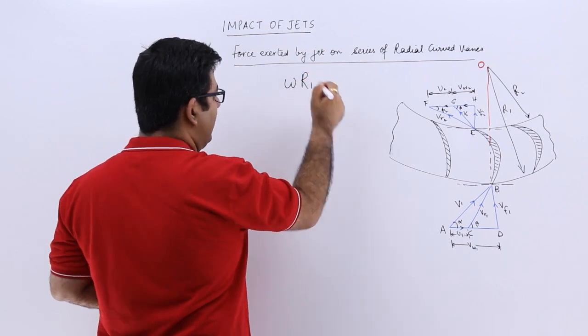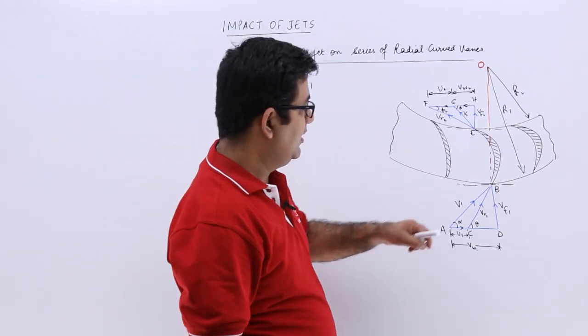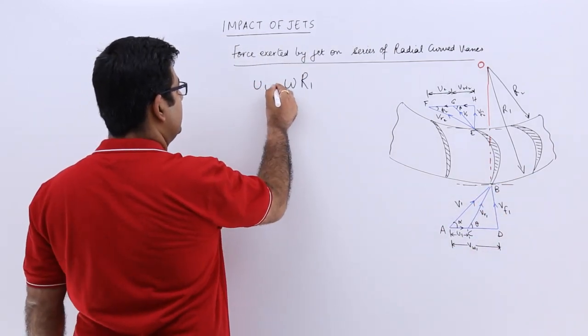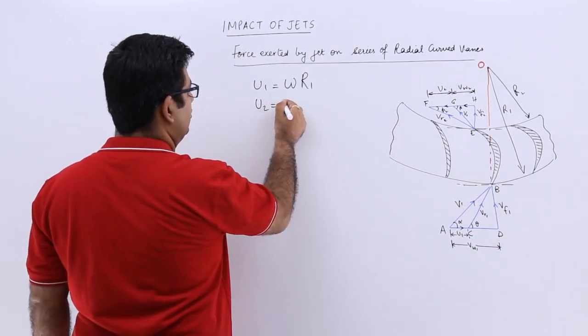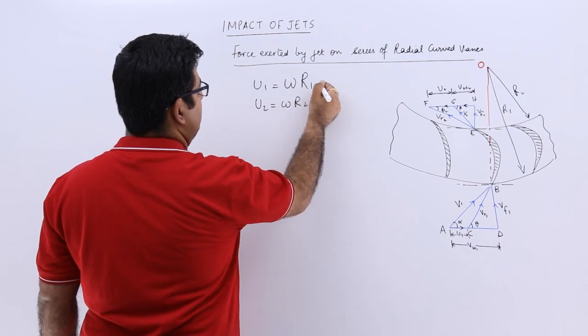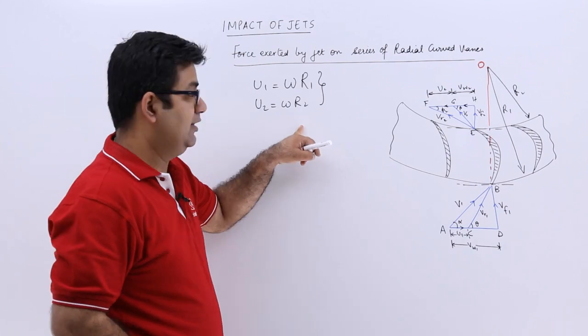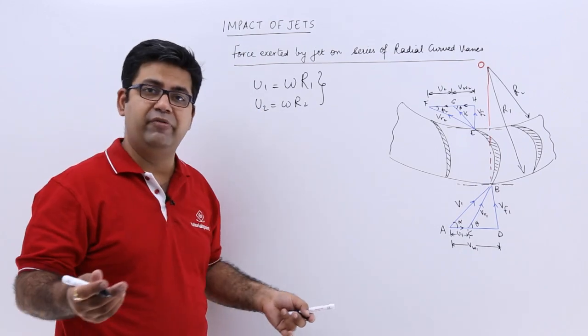If I multiply that with r1, that is the radius at the inlet, this would be u1, and for u2 I can use omega into r2. This clearly shows that because r1 and r2 are different, then u1 and u2 will also be different.